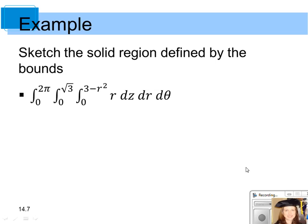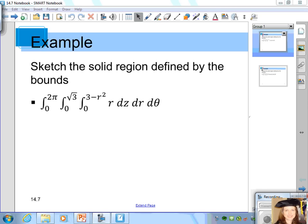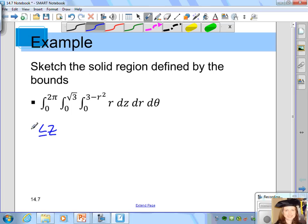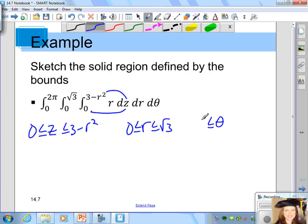In this example, we want to sketch the solid region defined by the bounds. The inside integral's differential is dz, so the bounds for z are from 0 to 3 minus r squared. Then r goes from 0 to the square root of 3, and the bounds for theta are from 0 to 2 pi. Pause the video and try sketching the solid region, then come back to check your work.